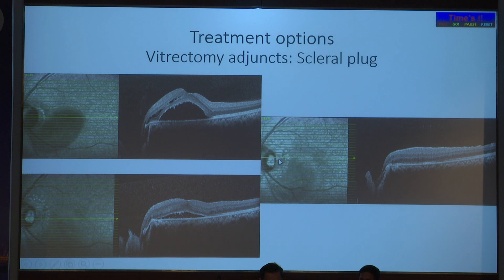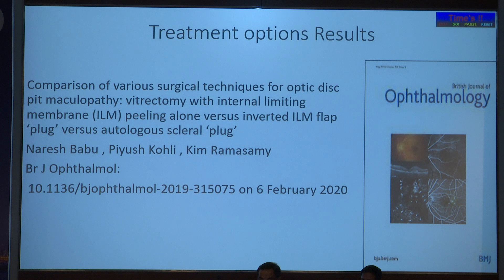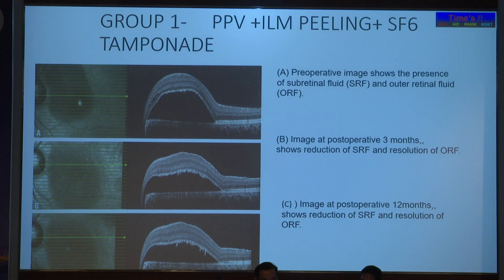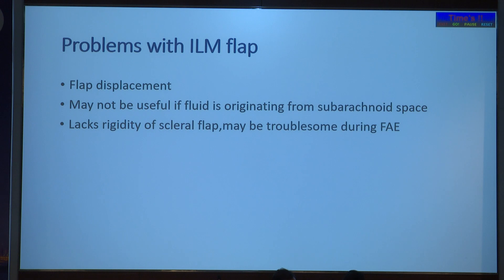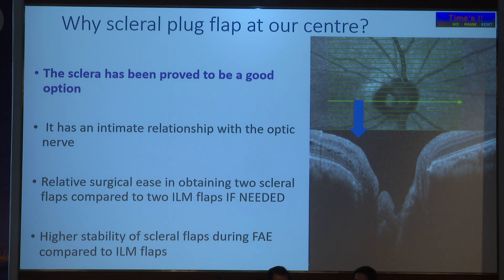Looking at results comparing all three options: complete anatomical success was achieved equally in scleral plug and ILM, but vision is better in the ILM case. The reason found is that when plugging with a scleral plug, there is every chance of damaging nerve fibers, though this doesn't always happen. The scleral plug is very useful if you have multiple pits, or if you lose the ILM during surgery as an alternative. Resolution happens within three to six months with the scleral plug due to its intimate relationship with the optic nerve.